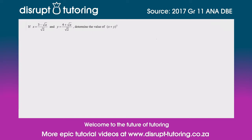The problem says: if x = (3 - √a)/√2 and y = (4 + √a)/√2, determine the value of (x + y)². What I'm going to do is make a big bracket squared and plug in the values.